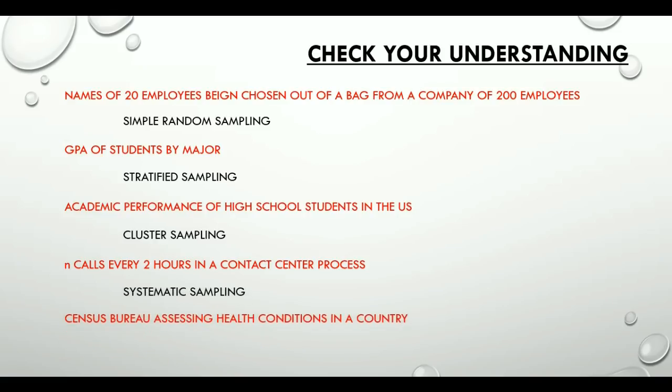The last one: Census Bureau assessing health conditions in a country. When we talk about health conditions in a country, the sampling has to be exhaustive. It would start at a country level, come down to state level, then city level, and then neighborhood level, meaning we are collecting samples in different stages. Hence, this would be a multi-stage sampling example.